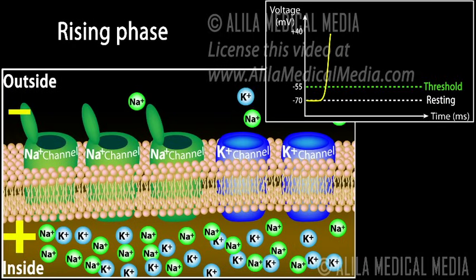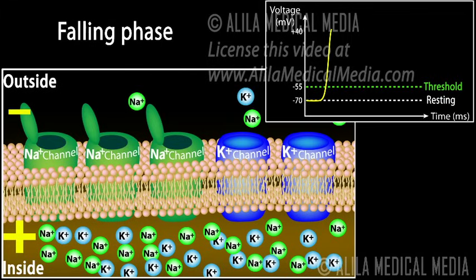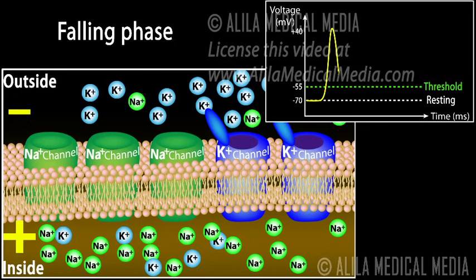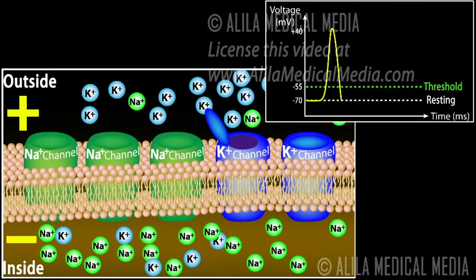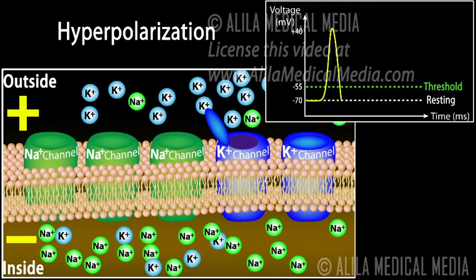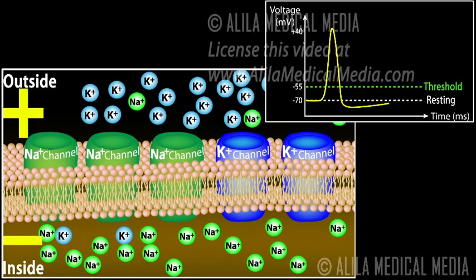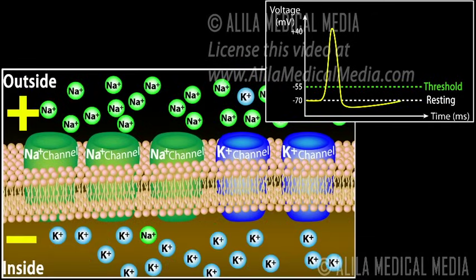Note that the polarity across the cell membrane is now reversed. As the action potential nears its peak, sodium channels begin to close. By this time, the slow potassium channels are fully open. Potassium ions rush out of the cell and the voltage quickly returns to its original resting value. This corresponds to the falling phase of the action potential. Note that sodium and potassium have now switched places across the membrane. As the potassium gates are also slow to close, potassium continues to leave the cell a little longer, resulting in a negative overshoot called hyperpolarization. The resting membrane potential is then slowly restored thanks to diffusion and the sodium-potassium pump.